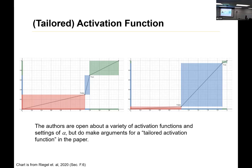Here are some examples of the activation functions used. They say you have this alpha setting and the activation function — these are parameters — and they talk about how there are a lot of different options. But later in the paper they talk about the tailored activation function, and we'll talk about why that in particular is important. It has a lot to do with the optimization procedure, and we'll touch on that in a moment.